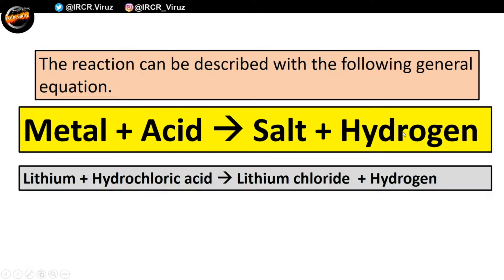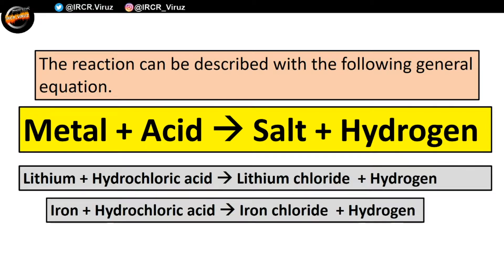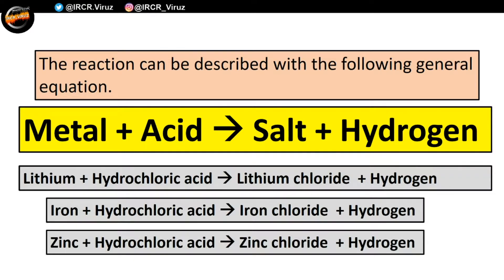Let's have some examples. First, we've got lithium plus hydrochloric acid gives you lithium chloride plus hydrogen. Then, iron plus hydrochloric acid will give you iron chloride plus hydrogen. And the third example is zinc: zinc plus hydrochloric acid will give you zinc chloride and hydrogen. When we change the metals, the name of the salt will also change, and as we're using hydrochloric acid throughout, it's always going to be chloride.